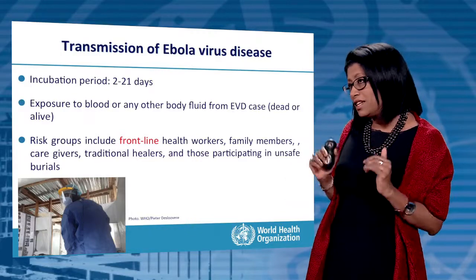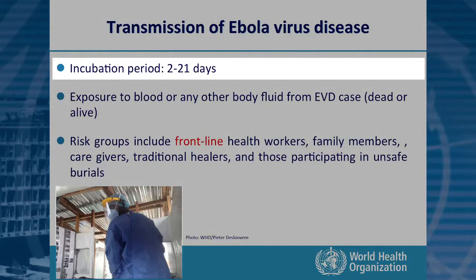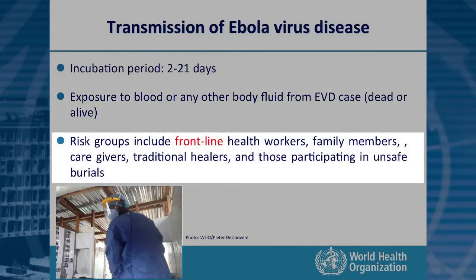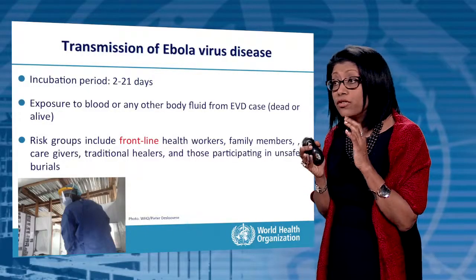A brief revision on transmission of Ebola virus disease. The incubation period is 2 to 21 days, which is very important for case management — if somebody has symptoms or exposure, we need to watch them for at least 21 days. Exposure to blood or any other body fluid from a person with Ebola, dead or alive, is a threat to healthcare workers, families, and communities. High-risk groups include frontline health workers, family members, caregivers, traditional healers, and those participating in unsafe burials. Specialized training on how to protect yourself is essential.